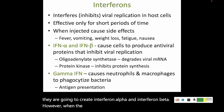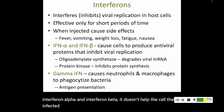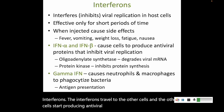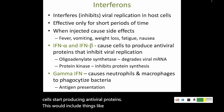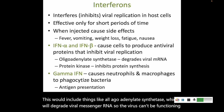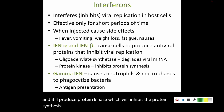When the cell is infected with a virus and creates interferon alpha and interferon beta, it doesn't help the cell that's infected — it helps the cells around it. So your cell is infected, it produces these two interferons, and the interferons travel to the other cells. Those other cells start producing antiviral proteins, including oligoadenylate synthetase, which will degrade viral messenger RNA, and protein kinase, which will inhibit protein synthesis. So the virus can't start making proteins.